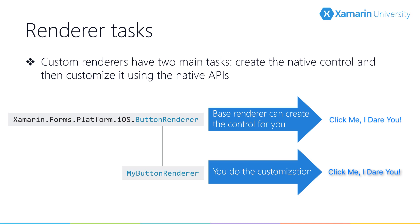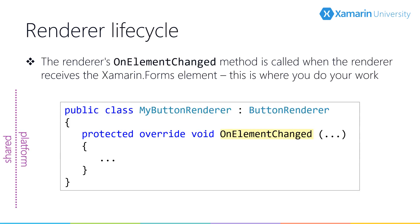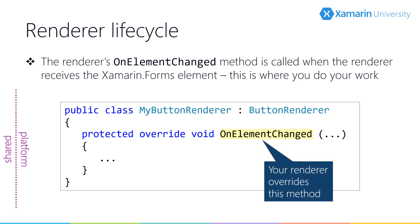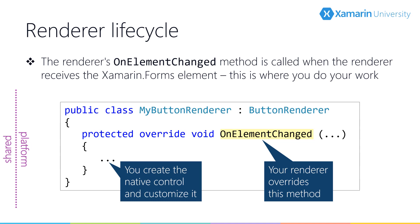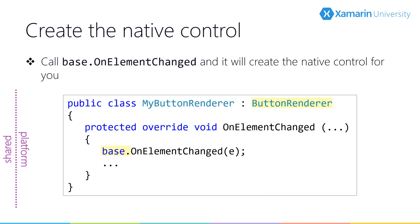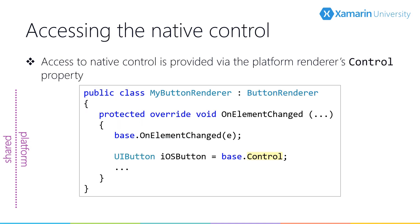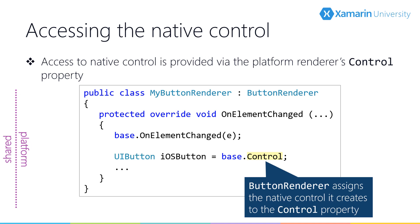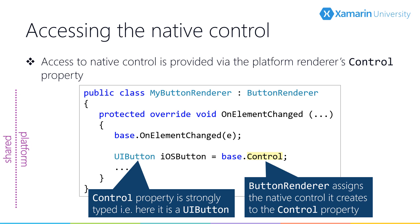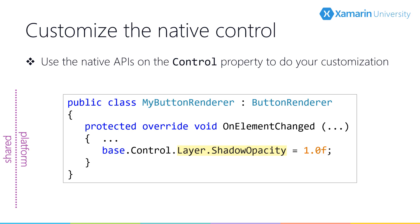In the derived renderer for each platform, you'll need to override OnElementChanged. This is the most important method in your renderer — it tells you when the renderer has received a new Xamarin Forms element, and this is where the native control is created and customized. Because we're deriving from an existing renderer, the base renderer will create the correct native control, so don't forget to call the base implementation. Once the native control has been created, it can be reached through the renderer's Control property, which is strongly typed. For example, in our iOS button renderer, Control will be of type UIButton and expose all its methods, properties, and events. We can then use the Control property to customize appearance and behavior — for example, setting the shadow opacity.